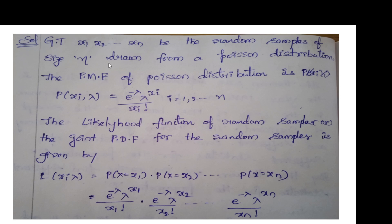Given: X1, X2, up to Xn be random samples of size n drawn from a Poisson distribution. The Poisson PMF is: P(X = xi) equals e to the power minus lambda, into lambda to the power xi, divided by xi factorial, where i equals 1 to n. First, we write the likelihood function.